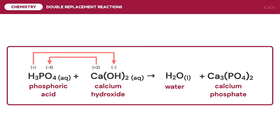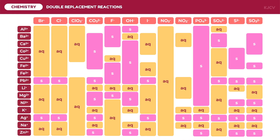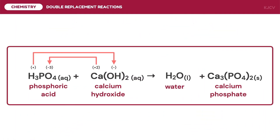Let us now determine if calcium phosphate will be a precipitate or aqueous. The ions forming calcium phosphate are the calcium cation and the phosphate anion. The compound formed by these ions is a solid, thus there is a precipitate in this reaction. Balancing the chemical reaction, we have 2 moles of aqueous phosphoric acid reacting with 3 moles of aqueous calcium hydroxide to form 6 moles of water and 1 mole of solid calcium phosphate. This example is proof that neutralization reactions may also result in precipitate formation.